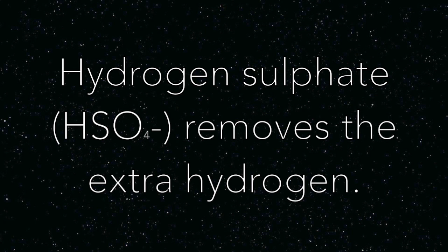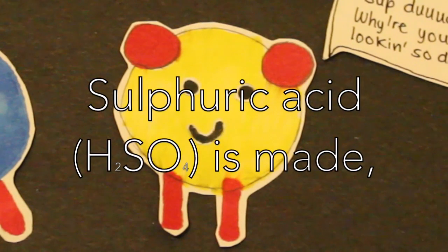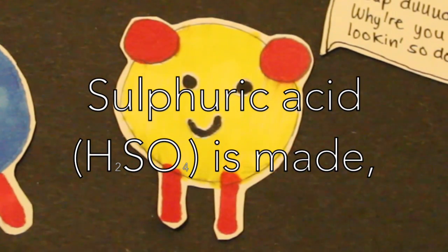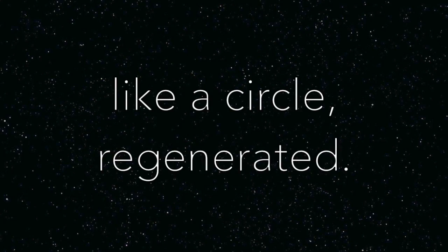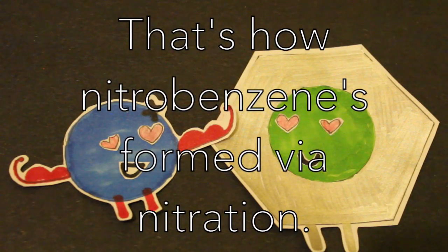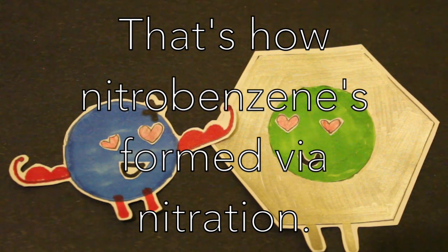Hydrogen sulfate removes the extra hydrogen. Sulfuric acid is regenerated, like a circle. That's how the nitrobenzene is formed, by nitration.